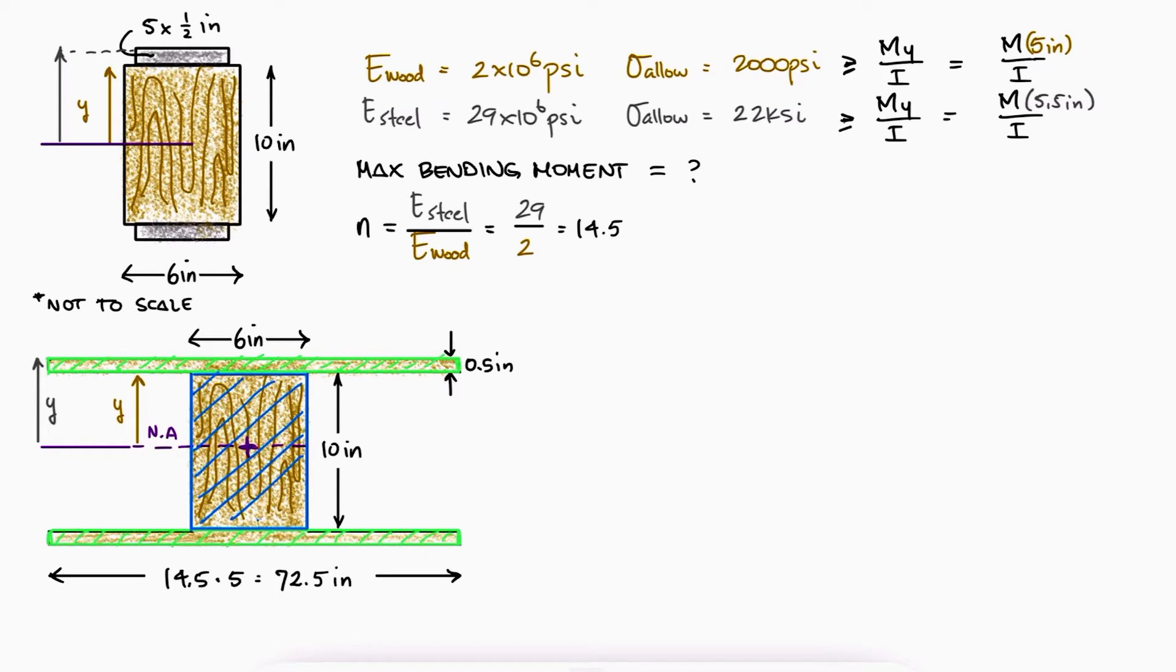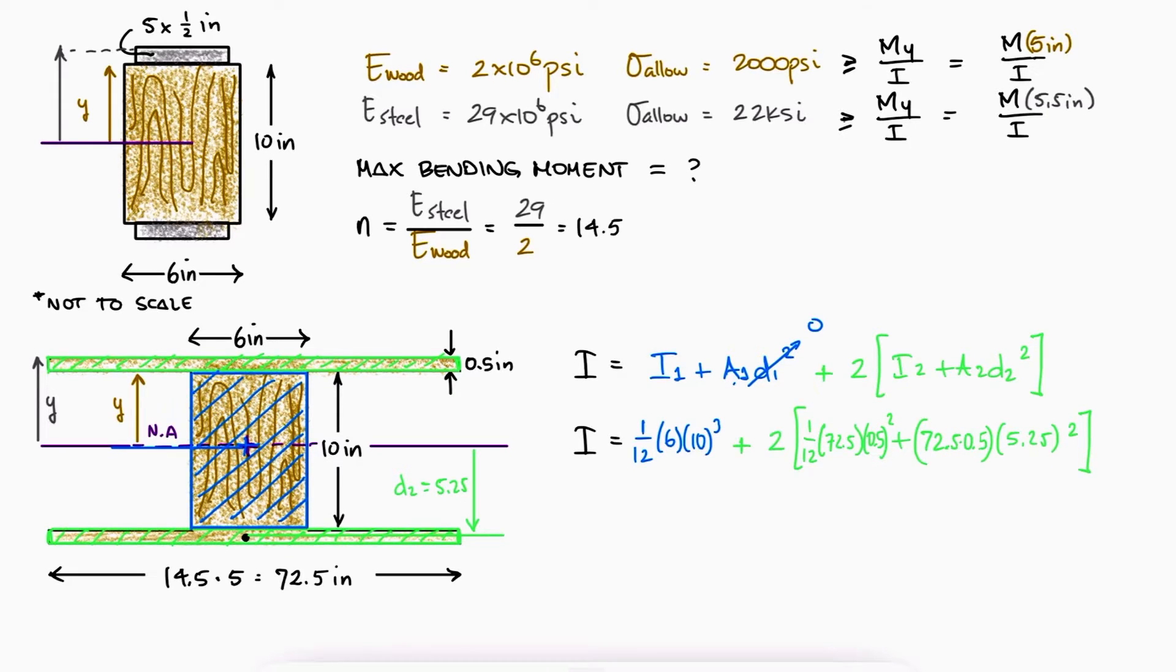With the parallel axis theorem, we can find the overall second moment of area. The distance from the neutral axis to the centroid of the blue figure is 0, and the distance from the neutral axis to the centroids of the green rectangles is 5.25. With the second moment of area and the area for the rectangles, we find the value for I for both stresses.